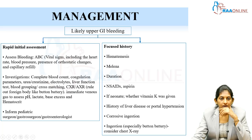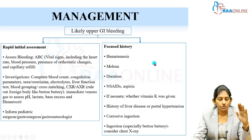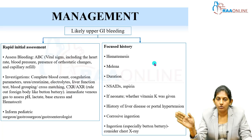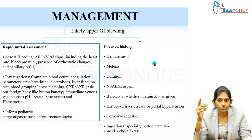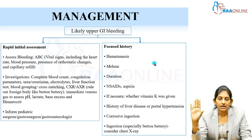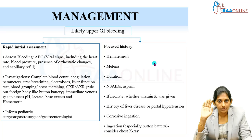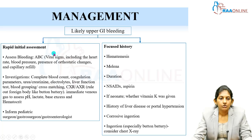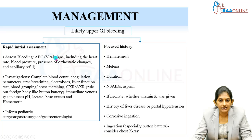Coming to management: if the child presents with UGI bleeding, the first thing is resuscitation. Take care of the airway, breathing, and circulation. Do a quick vital assessment — is the child hemodynamically stable or hemodynamically unstable? That is our first concern; etiology is next. Do your quick ABC assessment and take vital signs to determine stability.